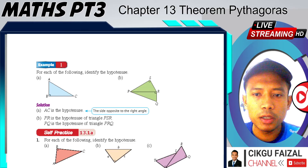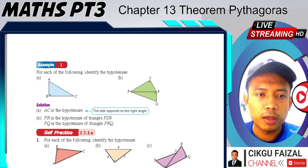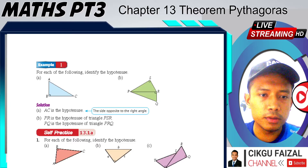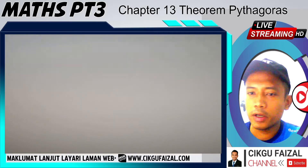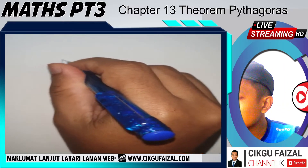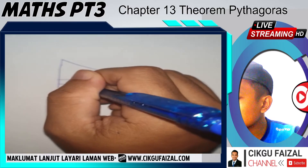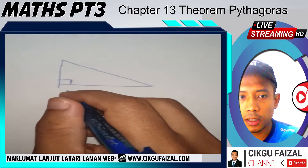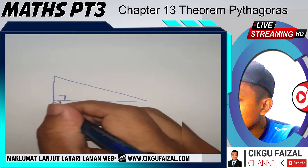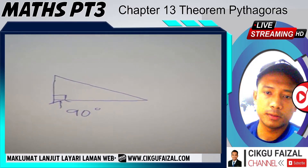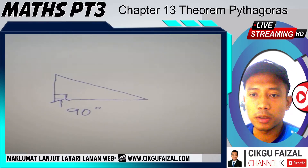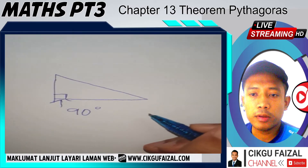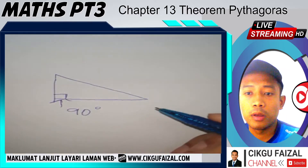Okay, you look at Example 1 over here. For each of the following, identify the hypotenuse. As you look at question A, this is the right-angled triangle. Right-angled triangles must have 90-degree angles, represented by a box symbol. This box symbol indicates the 90-degree angle — whenever you see this box symbol, it means 90 degrees.